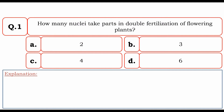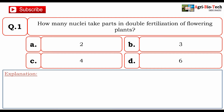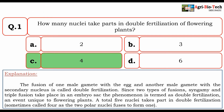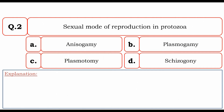The first question: how many nuclei take part in double fertilization of flowering plants? The options are two, three, four, and six. The correct option is C: four. The fusion of one male gamete with the egg and another male gamete with the secondary nucleus is called double fertilization. Since two types of fusions — syngamy and triple fusion — take place in an embryo sac, the phenomenon is termed double fertilization, an event unique to flowering plants.